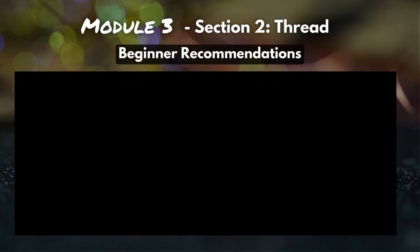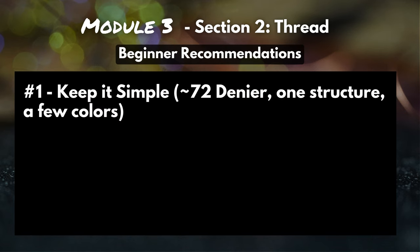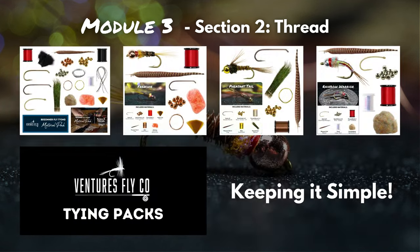You made it through the ABCs of fly tying thread — now let's talk beginner recommendations. If you're just starting out, we would recommend grabbing some 72-denier, one structure thread in a few different colors — either nylon or polyester. You'll be able to tie pretty much any fly you want without any issues. In fact, in our material packs here at VFC, we've kept it simple: one denier, one structure, a few different colors, and they work just great.